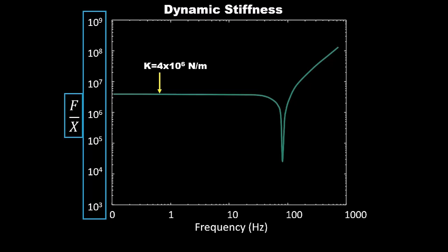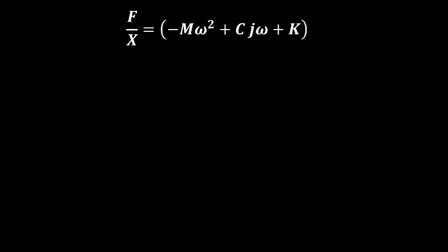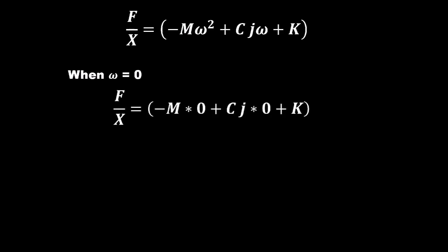If you're wondering where this value comes from, you'd have to go back to the original equation used to generate the dynamic stiffness graph. The flat stiffness portion occurs in the low frequency range, so if we assume omega is equal to zero, the omega terms cancel and you end up getting K. At very low frequency values, your FRF is equal to your stiffness value. It's sort of the same idea for the rest of the FRFs we're going to talk about.